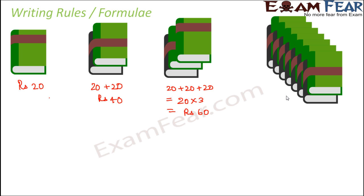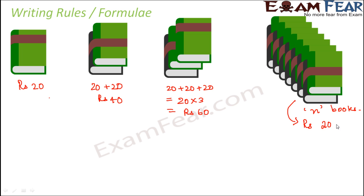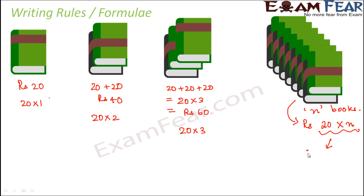So in this case, what do we do? Let's say that for n number of books — and n could be anything: 100, 10, 625, 1015, any number. For n number of books, the total cost would be 20 multiplied by n, because for one book it was 20 into 1, for two books it was 20 into 2, for three books it was 20 into 3, and so on. So for n books, the cost is 20 into n, which is 20n.